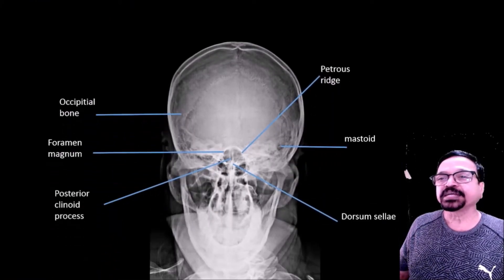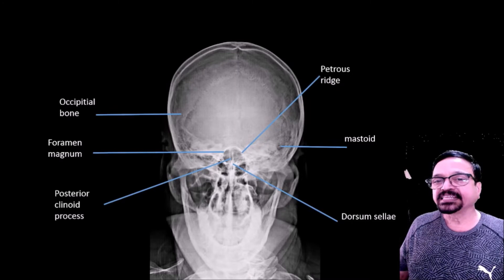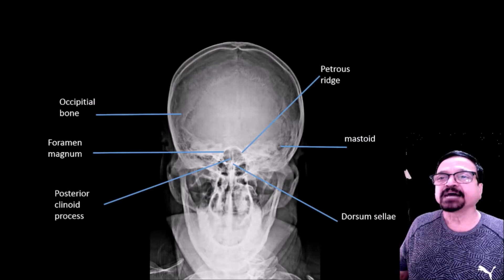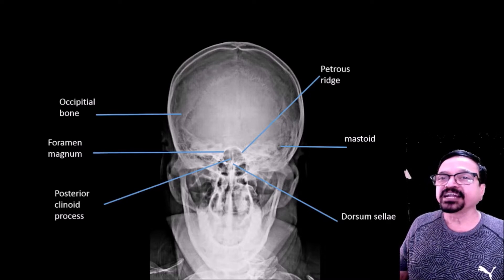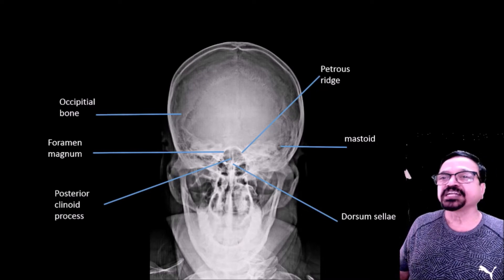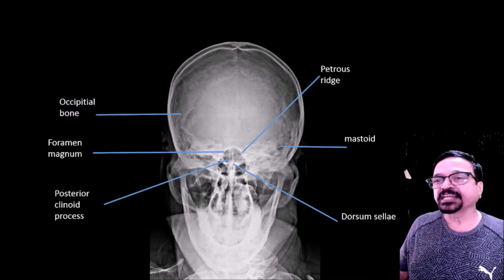In the Towne's view you can see the dorsum sellae and the posterior clinoid processes. The sella turcica is seen in cross-section. Both petrous ridges are projected above the foramen magnum, so you can clearly see the foramen magnum and evaluate any fractures involving it. It is a wonderful view for this purpose.